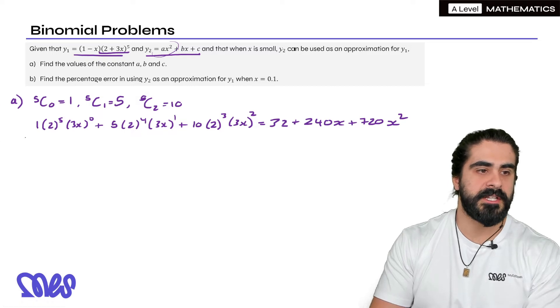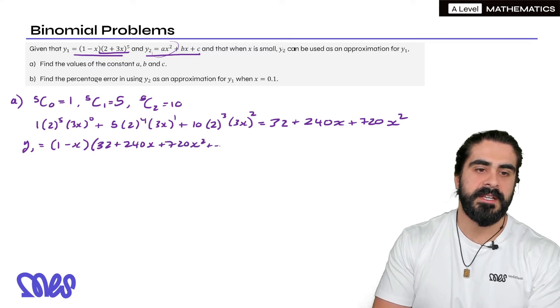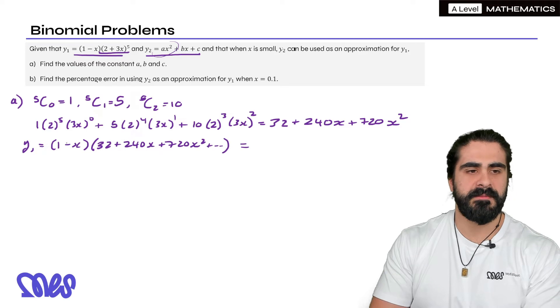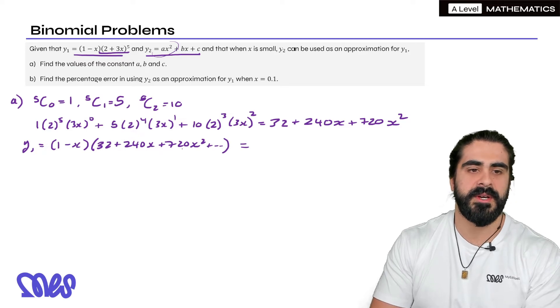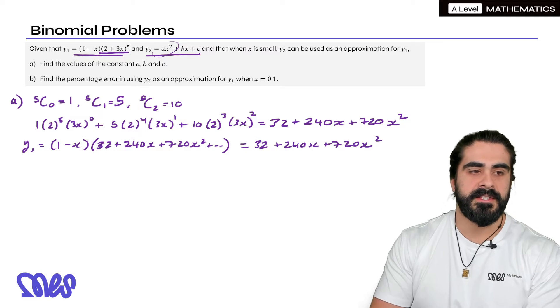Now we need to do our full expansion for y1. So y1 would be (1 - x) times this expansion: 32 + 240x + 720x^2. Then it keeps going. Now we only need to expand all the relevant terms up to x squared. So you're going to do 1 times everything. Then I like to line things up.